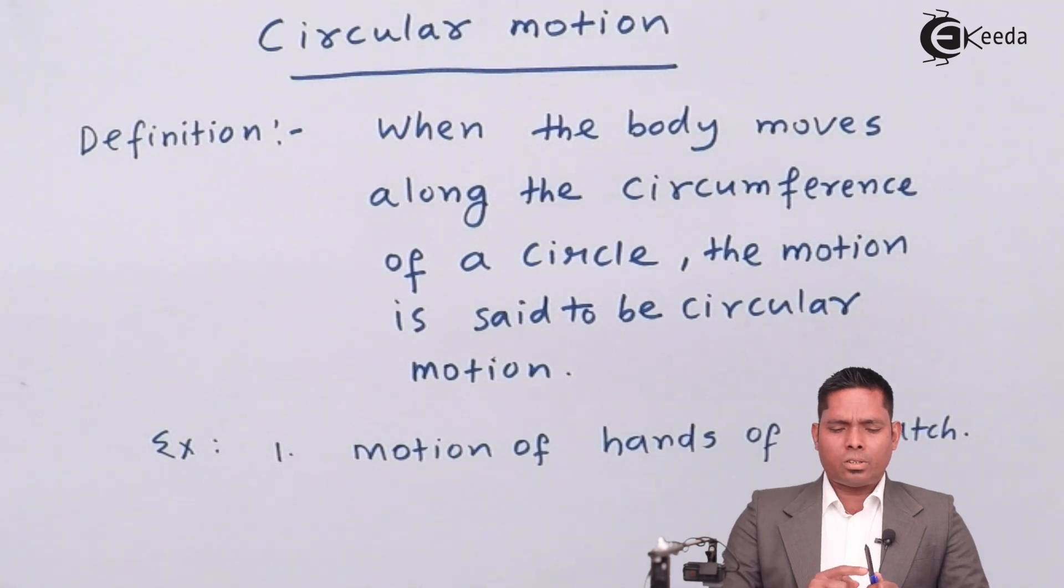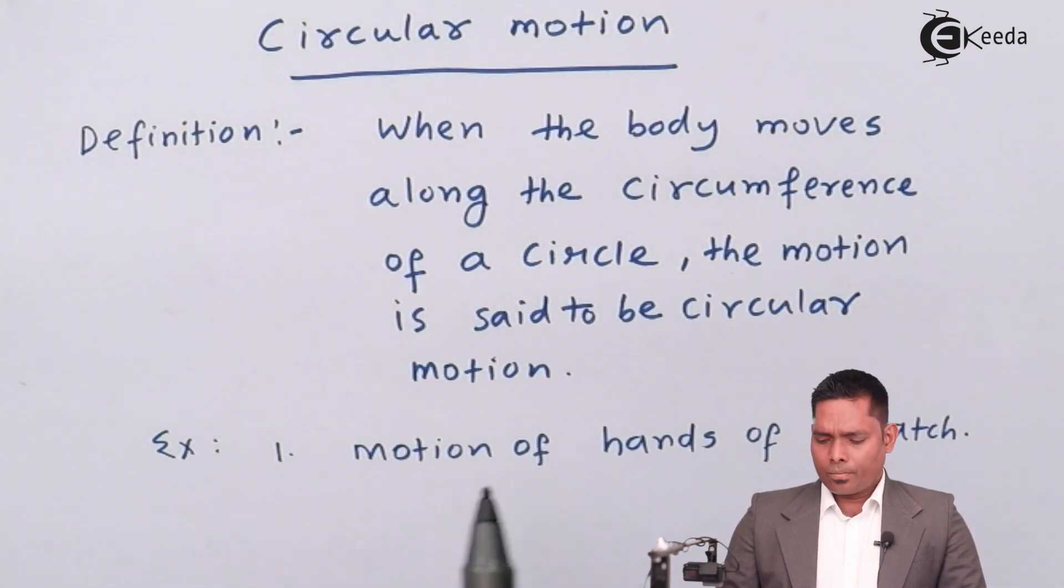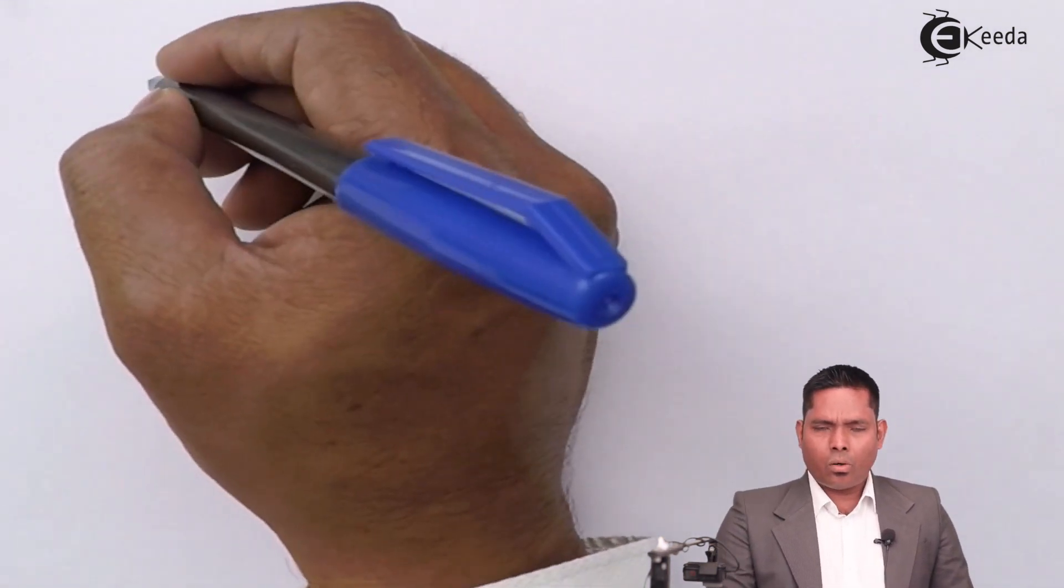Now, as a whole this is not moving in a circular path. This body as a whole is not moving in a circular path. But any point is moving in a circular path. So, we have one more example of circular motion.